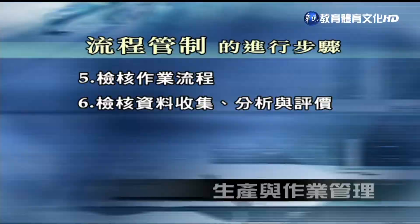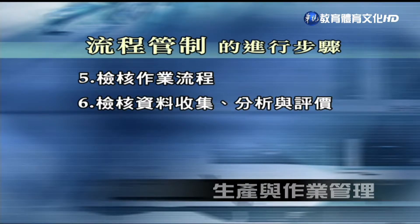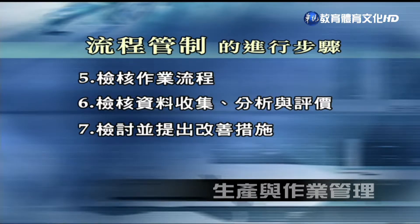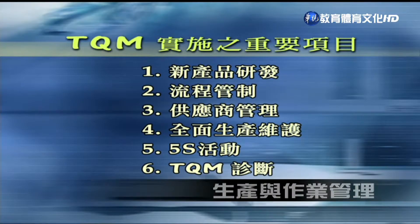第六，查核相关资料的收集、分析与评价，可用管制图或时间推移图来监控作业管控方式，看是否有异常发生，必要时要采取矫正行动；第七，检讨并提出改善措施，如果有项目未达预期目的就要找出原因来改善。